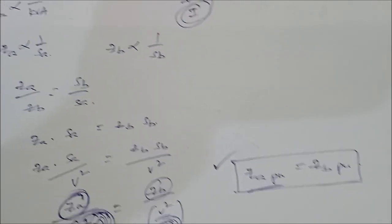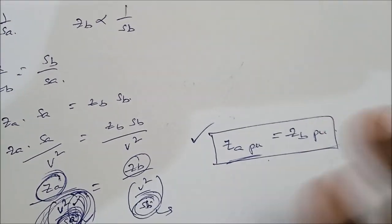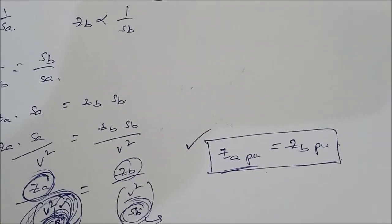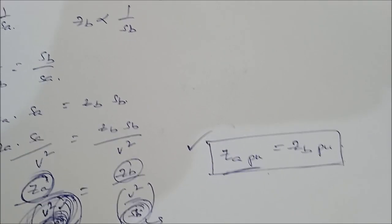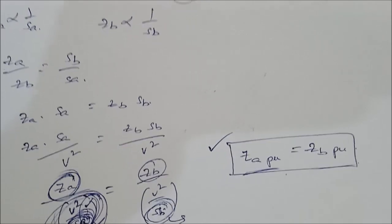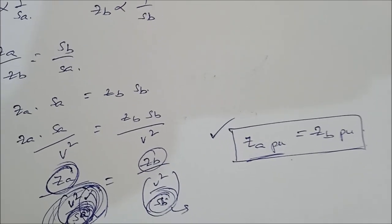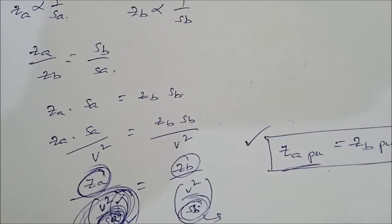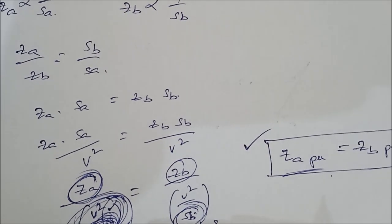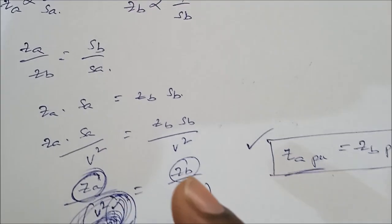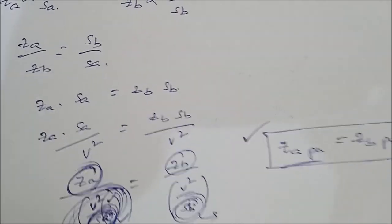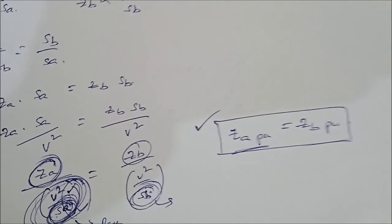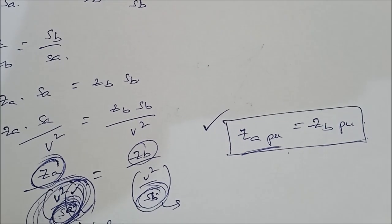This completes the concept of parallel operation of transformers. Regarding unequal voltage ratios: when Ea ≠ Eb, circulating currents are present in addition to the load currents — that is the key difference. In the cases discussed here, since Ea = Eb, there are no circulating currents. Thank you.